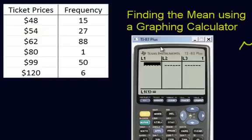Alright, so let's enter in the first column, which was the ticket prices. So 48, 54, 62, 80, 99, and 120.